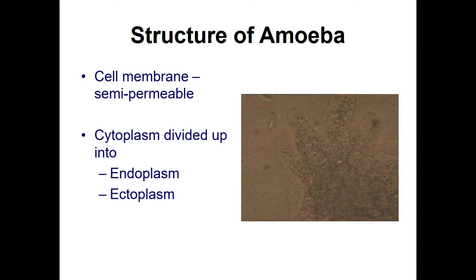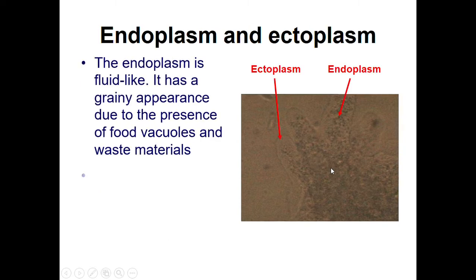The outermost layer of amoeba is a cell membrane, also called a semi-permeable membrane. Semi-permeable membrane means it determines what goes in and what doesn't — it doesn't allow everything. You can clearly see the outermost layer of the cell of an amoeba is called the ectoplasm, and the inner grey area is called the endoplasm.